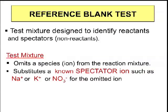You create the same mixture that you started with in the original reaction, but you omit a species from the reaction. You might say, how can I just omit mercury ion? I can't go to the shelf and find a mixture that just has a single ion. That is true. So we have to substitute a known species for whatever we're taking out.